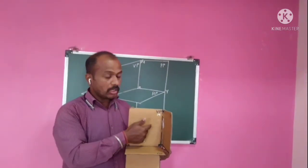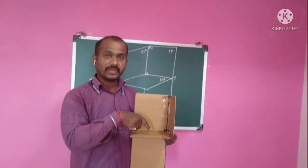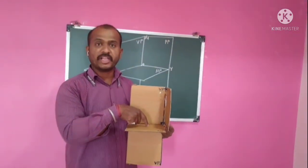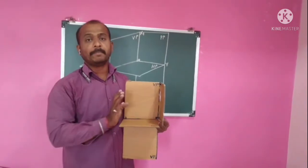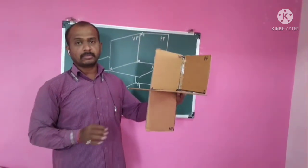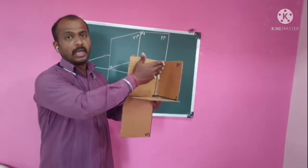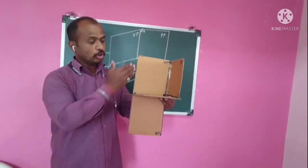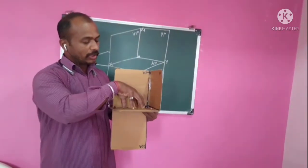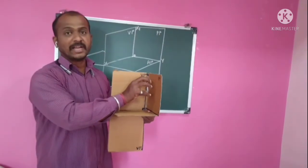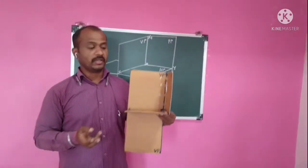We draw the front view on VP, the top view on HP, and the side view on PP. This is a 3D figure because the front view is here, the top view is here, and the side view is here. Now, how is it converted to a 2D figure?